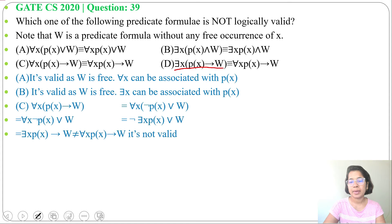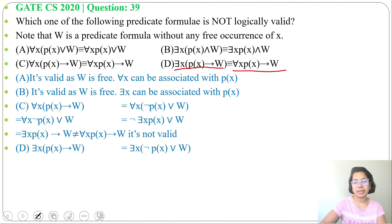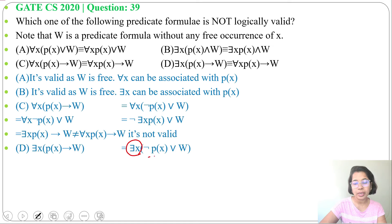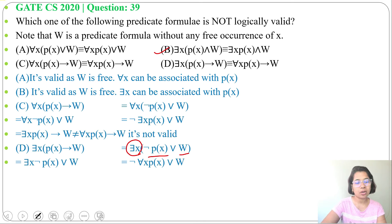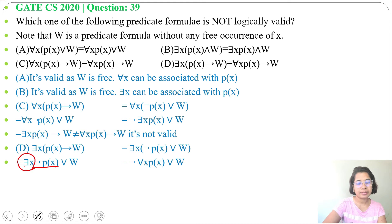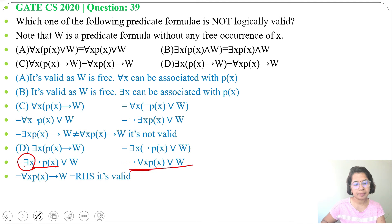Option D: there exists X (P(X) implies W) is logically equivalent to (for all X P(X)) implies W. Let's solve it. There exists X (P(X) implies W) can be written as there exists X (negation of P(X) or W), since P implies Q equals negation P or Q. We can add the existential quantifier only with P(X) as W is free, like option B. So we get: (there exists X negation of P(X)) or W, which equals (for all X P(X)) implies W — equivalent to the RHS. So option D is logically valid.